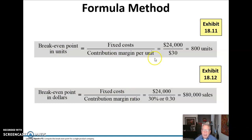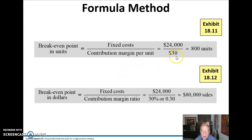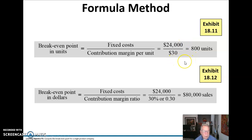Key formula here — break-even point in units: we're going to take the total fixed costs and divide that by the contribution margin per unit. That equals 800 units, which is the amount of units we need to basically overcome all those fixed costs of $24,000.